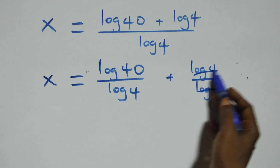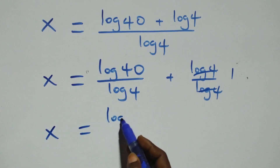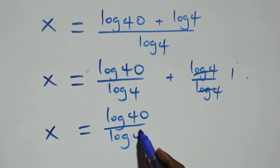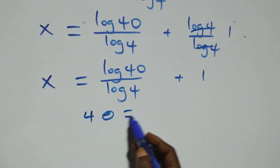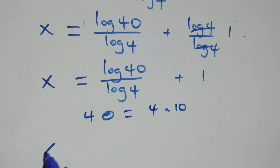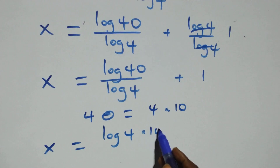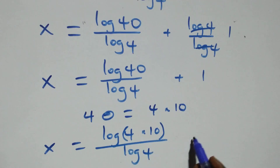Log 4 cancels each other, so we have 1 left. Which implies x equals to log 40 over log 4 plus 1. Then, also here, 40 can be expressed as 4 times 10. So here we have x equals to log of 4 times 10 over log 4 plus 1.